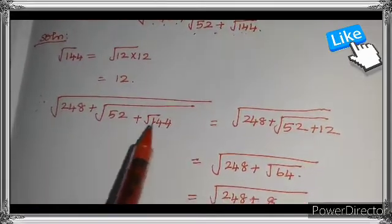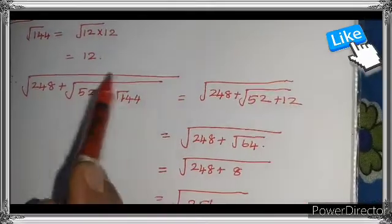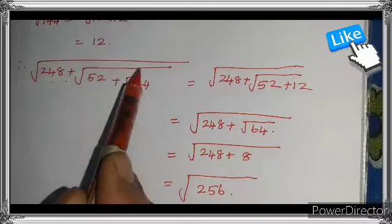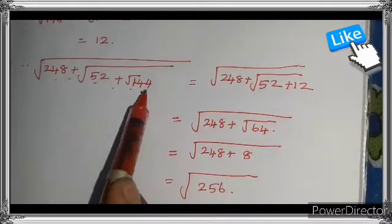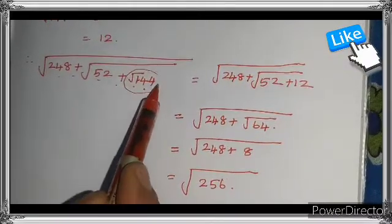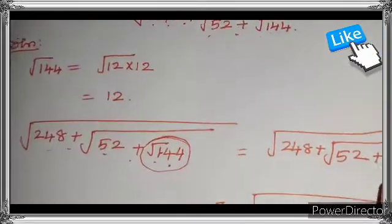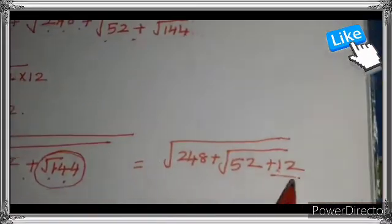So next we have to go to the problem. That is √(248 + √(52 + √144)). What is the square root of 144? That is equal to 12.